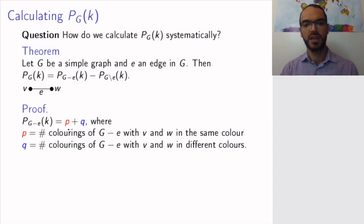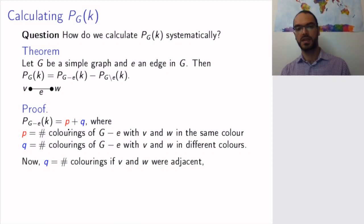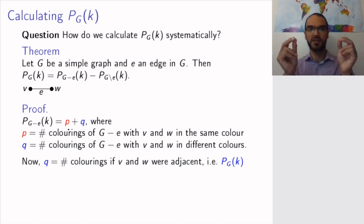So let's reinterpret those numbers. What does q mean? q is the number of colorings with v and w having different colors. So these colorings are exactly those that would work if v and w were adjacent, if we put back the edge E. In other words, these are exactly the number of colorings in the big graph G, because the only difference between G and G minus E is the adjacency of v and w.